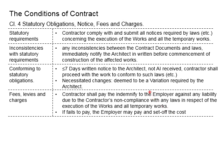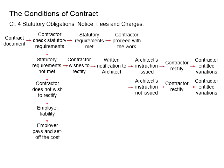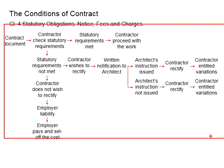Although the liability is nominally under the employer, this is claimable from the contractor. If the contractor is reluctant to pay for those penalties, the employer has the right to set off the cost that is supposed to be paid for the penalties. To better understand this clause, let us look at the flowchart.